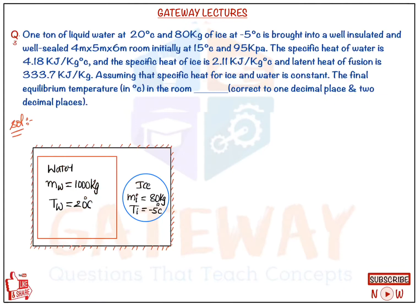One ton of liquid water at 20°C and 80 kg of ice at -5°C is brought into a well-insulated and well-sealed room. The room dimensions were given; it was initially at 15°C and 95 kPa. The specific heat of water is 4.18 kJ/kg·°C and the specific heat of ice is 2.11 kJ/kg·°C.